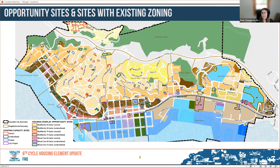An opportunity site is a site that's been preliminarily identified in the draft housing element as one that can be rezoned to accommodate a higher amount of growth than currently planned. All opportunity sites are shown on the figure, along with existing capacity sites. Sites with cross-hatching are housing overlay opportunity sites; sites with a yellow outline could potentially accommodate very low and low-income units. The housing opportunity sites are identified because the city's existing sites are not adequate to accommodate 724 units.